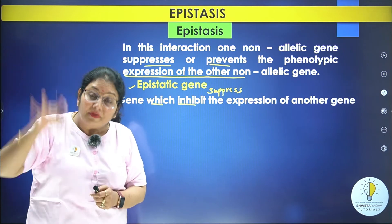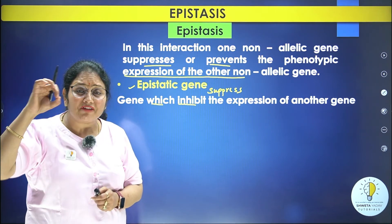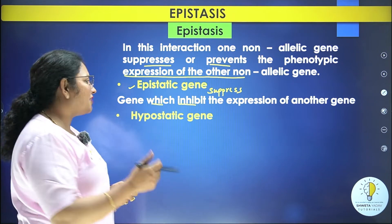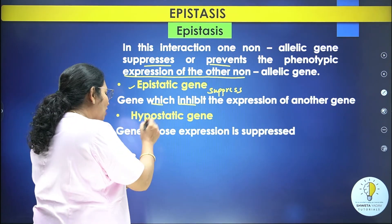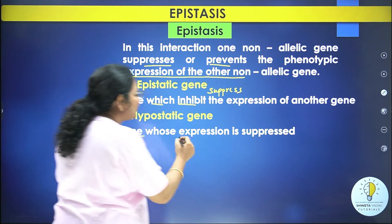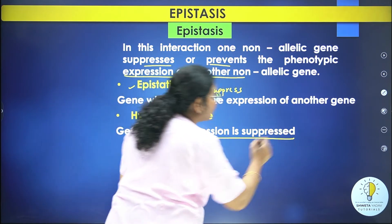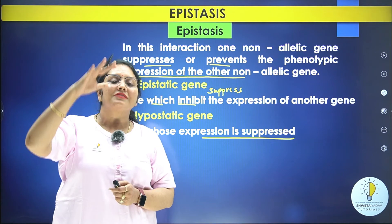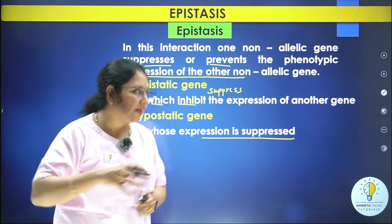And the gene that is being suppressed due to the presence of the epistatic gene is called the hypostatic gene. So what is the hypostatic gene? It is the gene whose expression is suppressed.